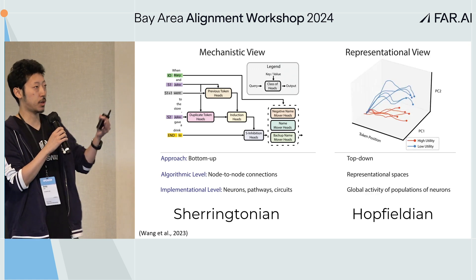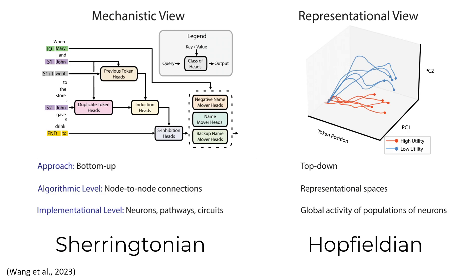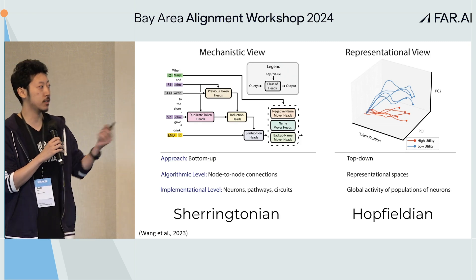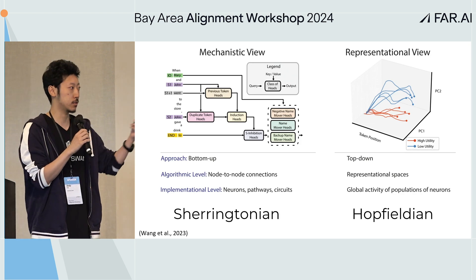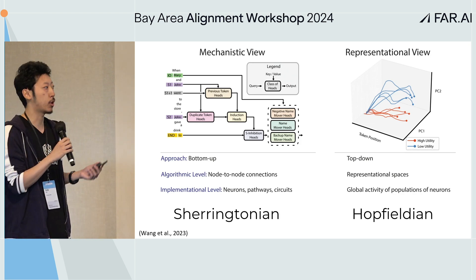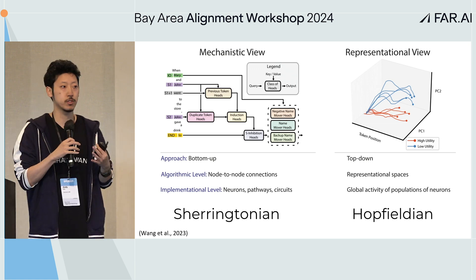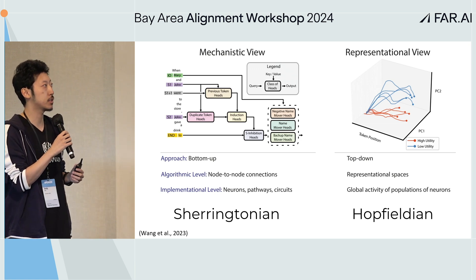In this work, we identify a contrasting view called the representational view, which approaches things from the top-down, looking at representational spaces for behaviors — directly examining global activities of populations of neurons. The corresponding analogy in cognitive neuroscience is the Hopfieldian view, which people are also gradually moving towards.